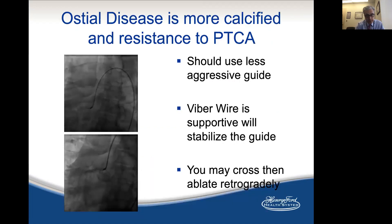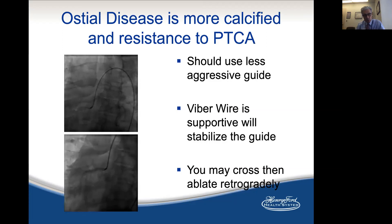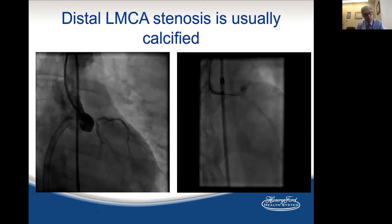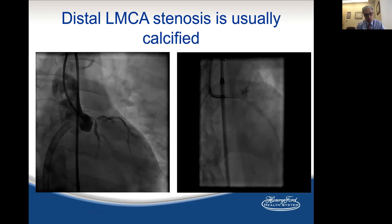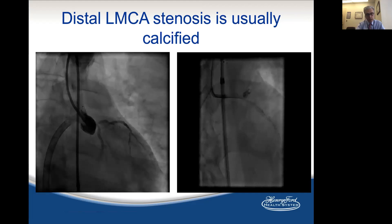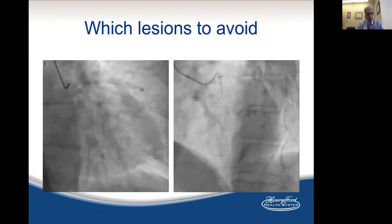Osteal disease is particularly suited for orbital atherectomy. I think we should use the supportive flex-tip wire that allows you to use a non-supportive guide catheter that can sit coaxially outside the ostium, and you can ablate antegrade or retrograde — I don't think it makes a difference. Left main disease — either osteal, mid-shaft, or especially distal disease — is especially suitable for orbital atherectomy, because the orbit is suited for large vessels. Normally the left main is a large vessel, so you can ablate more effectively around the plaque.